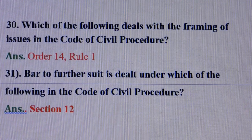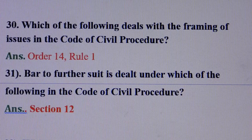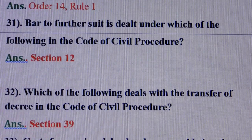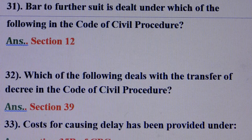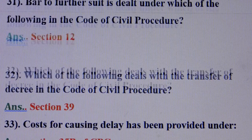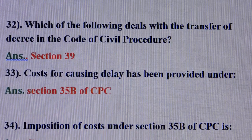Question number 30: Which of the following deals with the framing of issues in the Code of Civil Procedure? Answer is: Order 14 Rule 1. Question number 31: Bar to further suit is dealt under which of the following in the Code of Civil Procedure? Answer is: section 12. Question number 32: Which of the following deals with the transfer of decree in the Code of Civil Procedure? Answer is: section 39.